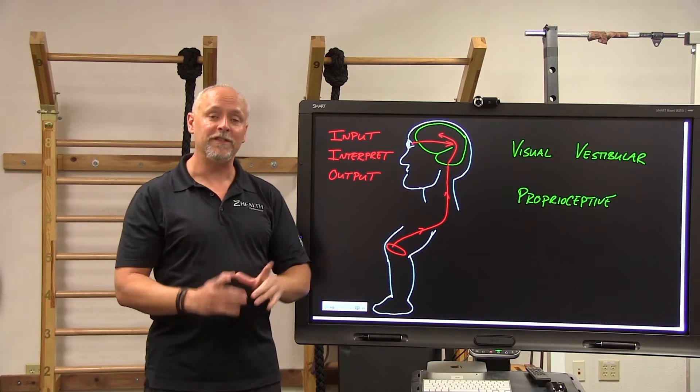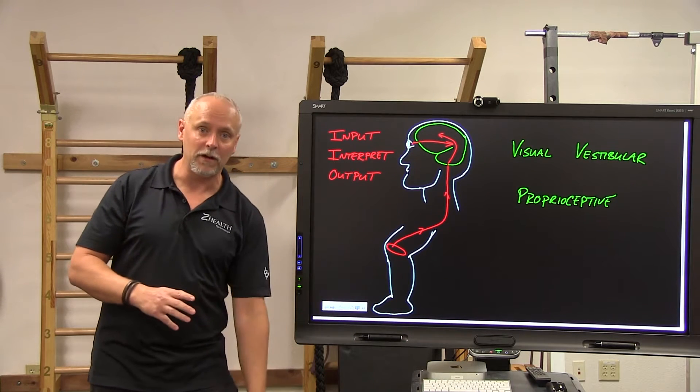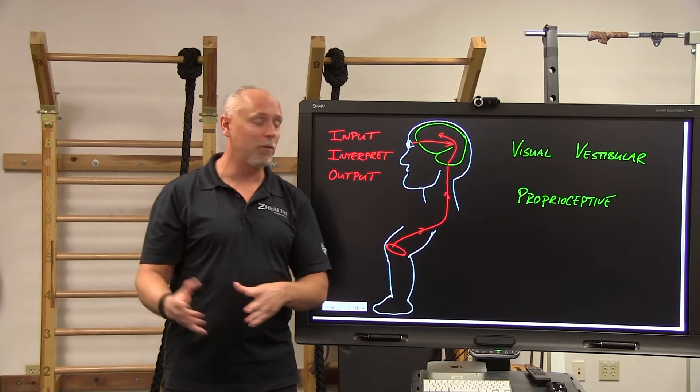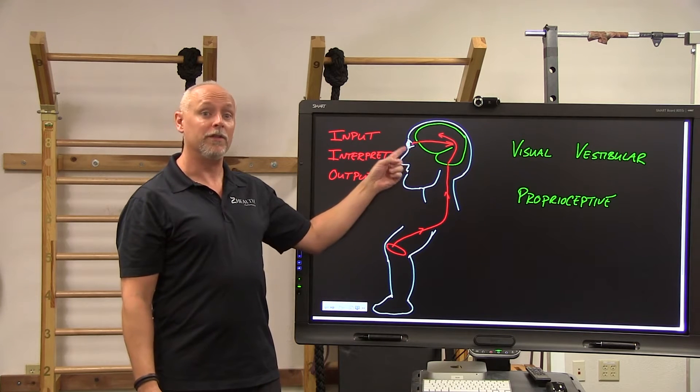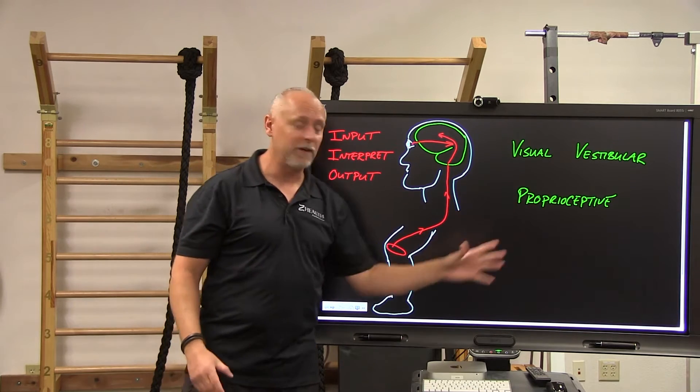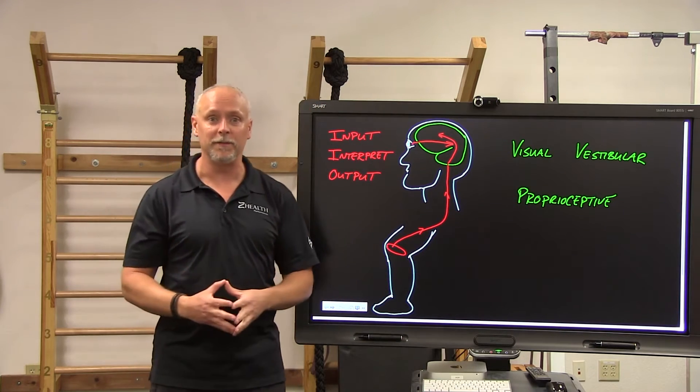What they found in this study was that people that had had an ACL repair, when you looked at their movement strategies when they went back to playing sports, they actually relied more on their vision to tell them about their environment than they did on what's called proprioception or the internal sensation from the knee.